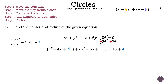Now we need to complete the square for the y quadratic. First we need to find the b term, which is positive 6. We need to divide positive 6 by 2 and square it. 6 divided by 2 is 3, and 3 squared is 9. Now let's add 9 back into our equation. Remember, if we add a 9 to the left-hand side we have to add a 9 to the right-hand side so we keep the equation equal.